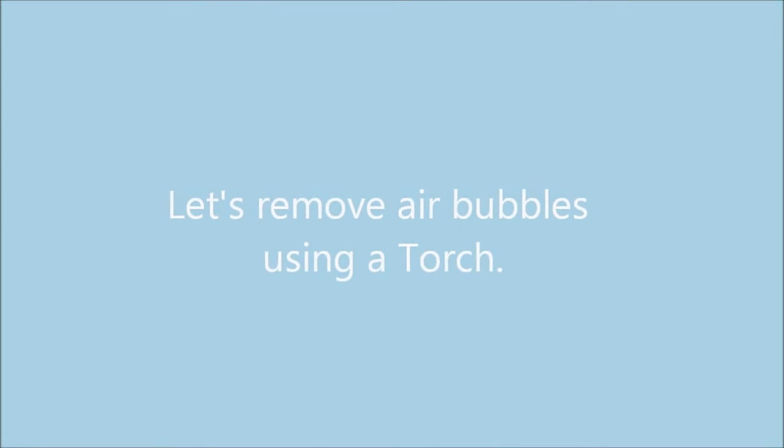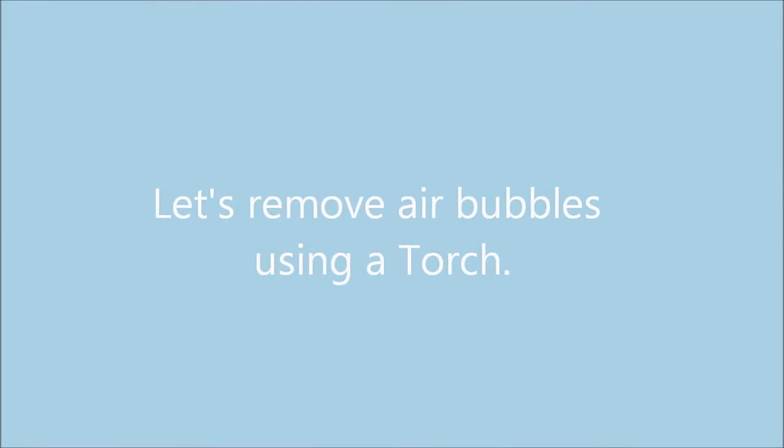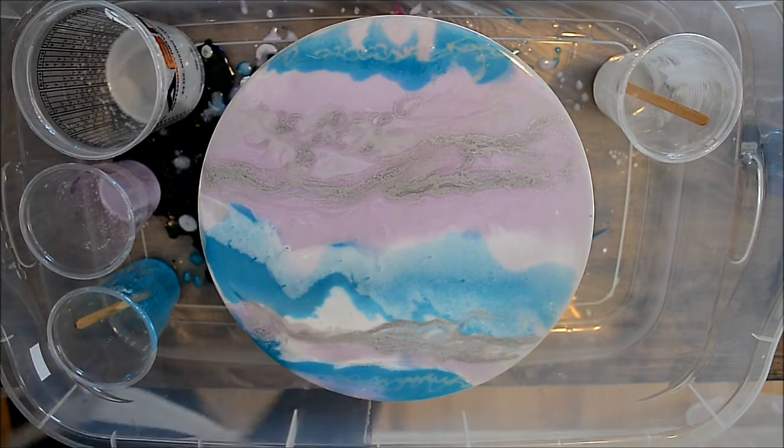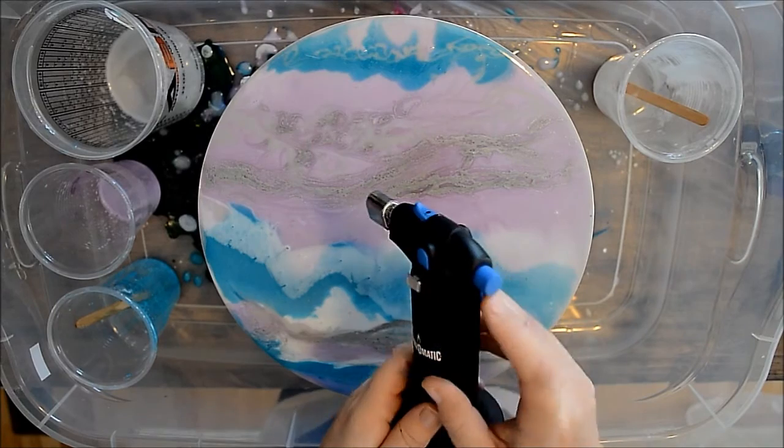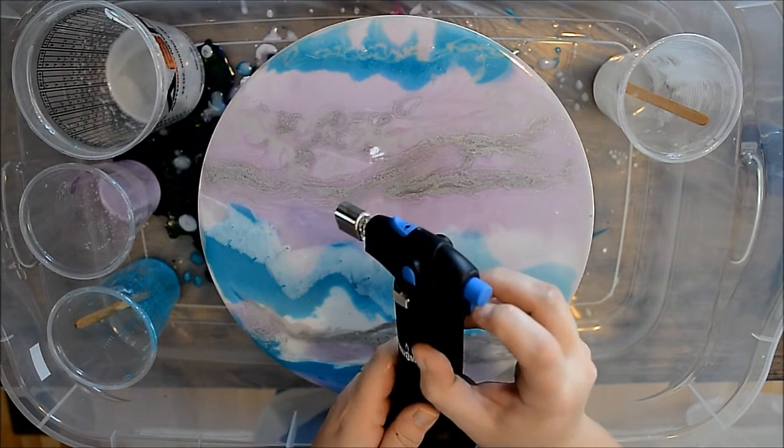Now we're going to remove the air bubbles using a small butane torch. I picked this torch up in the plumbing section. It has a little safety feature on here, so you're just going to push that down.